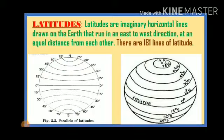At first, we will know about the latitudes. So what are latitudes? Latitudes are imaginary horizontal lines drawn on the earth that run in an east to west direction, at an equal distance from each other. You can see here in this picture that the lines are passing through the earth in an east to west direction, at an equal distance from each other, so they are parallel to each other, and they are making perfect circles.